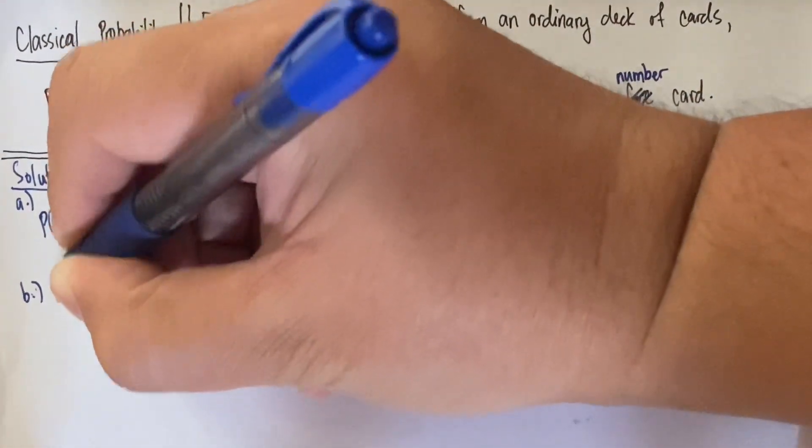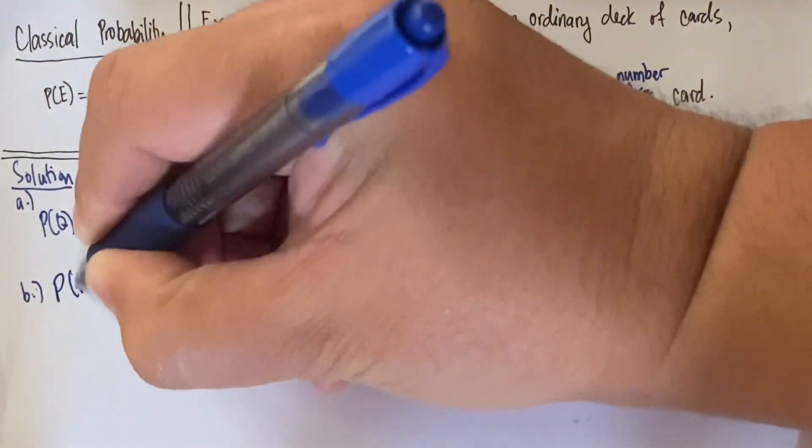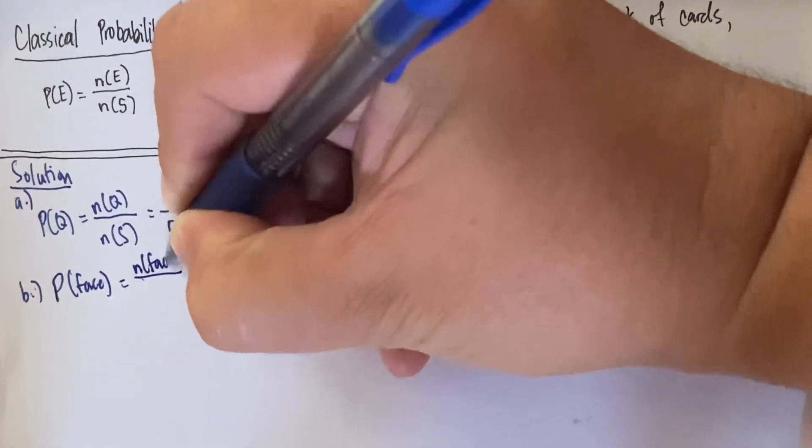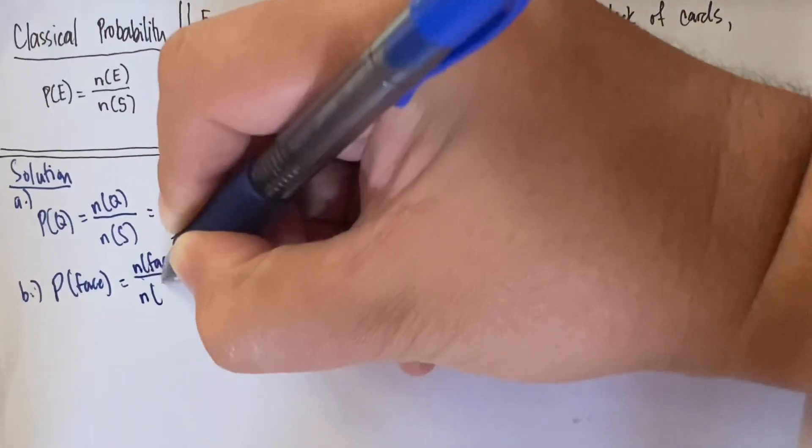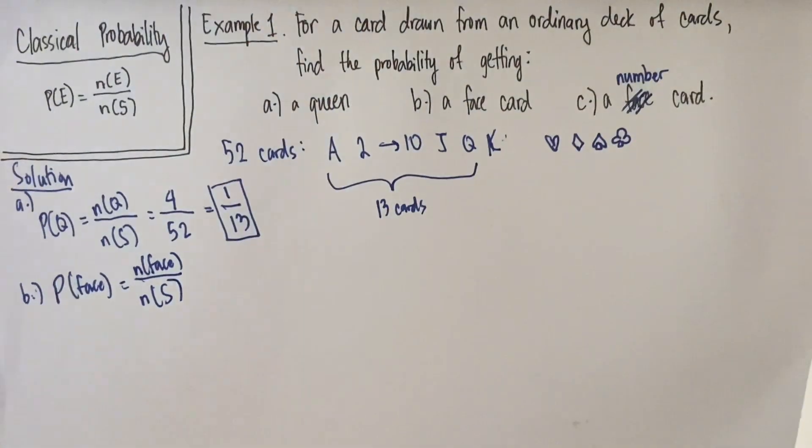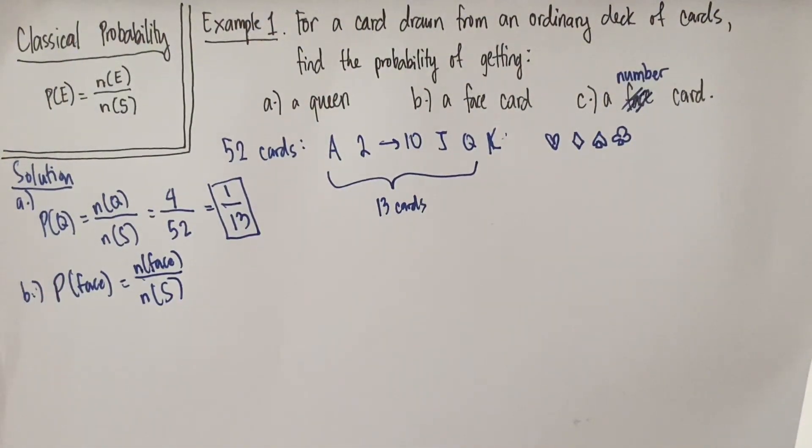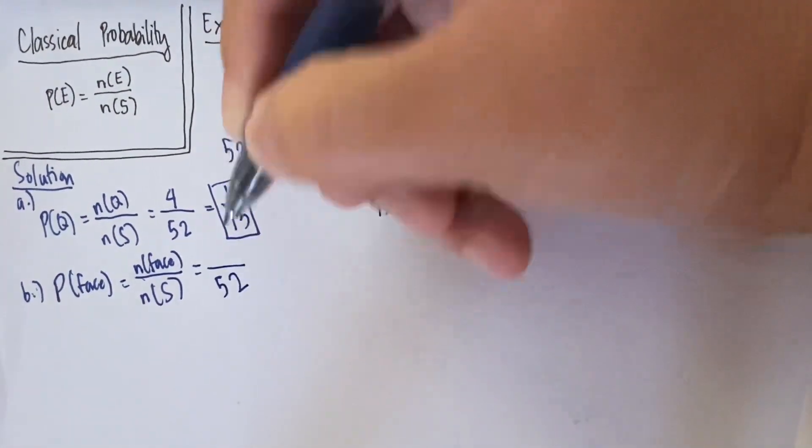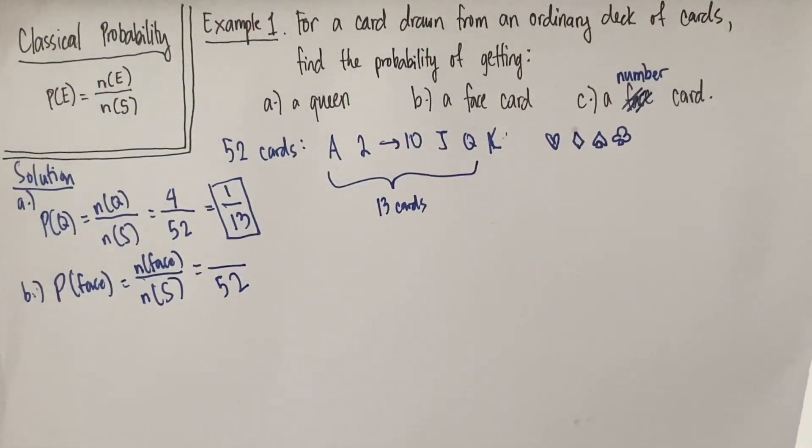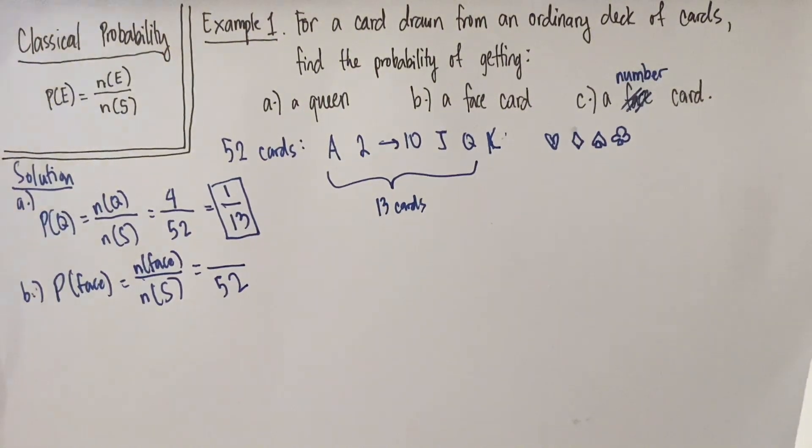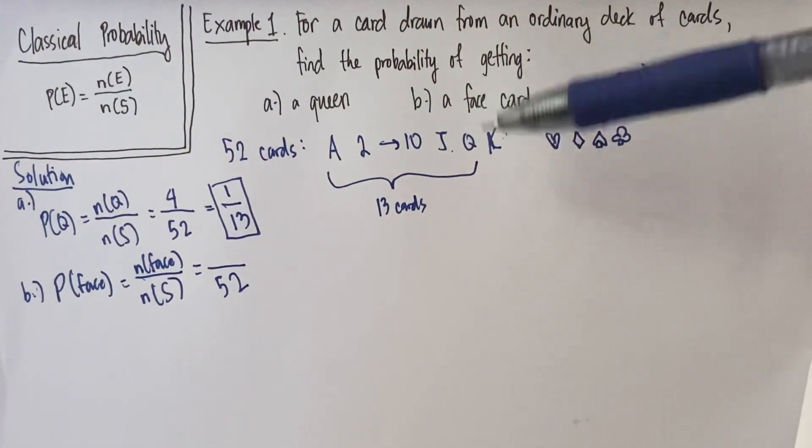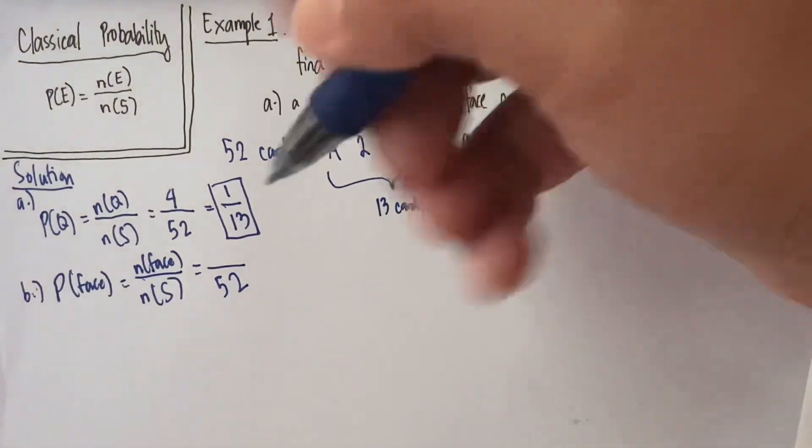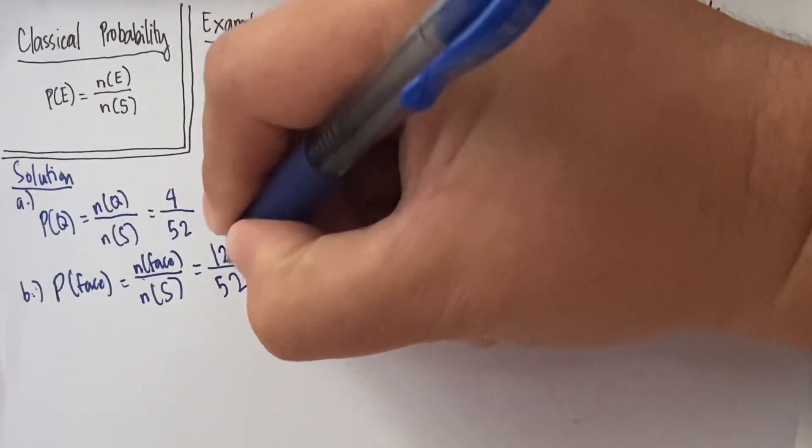So let's find the probability of getting a face card. This is simply equal to the cardinality of face cards in total divided by your sample space S. So again, we know that our sample space is equal to 52. And we're going to count our face cards. So we have three: jack, queen, king. Since we know that we have four suits, we have three times four. That'll give us 12.